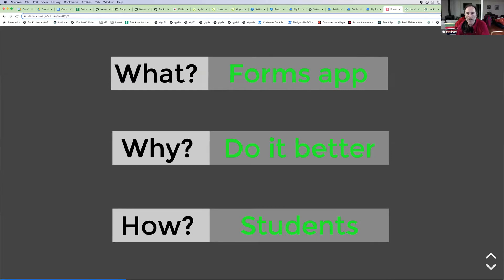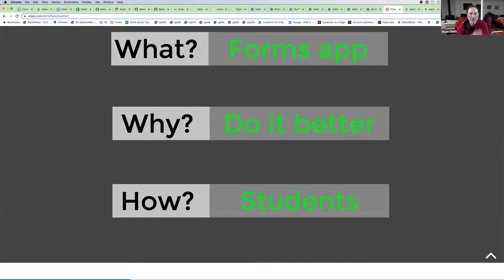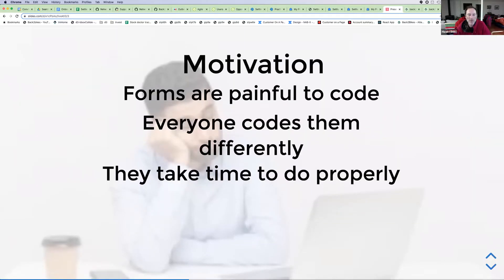So what are we doing here? We're building a forms app. We want to do better because what's out there isn't that great. Forms on the web are kind of painful to code — everyone does it differently, they take a long time to write, and if you have 50 or 100 forms it gets tedious and expensive. Your boss asks: why did these simple forms take so long? Good question.